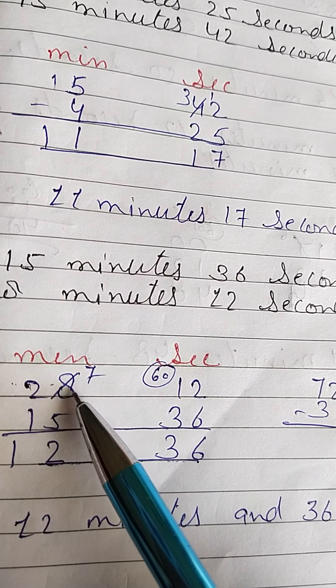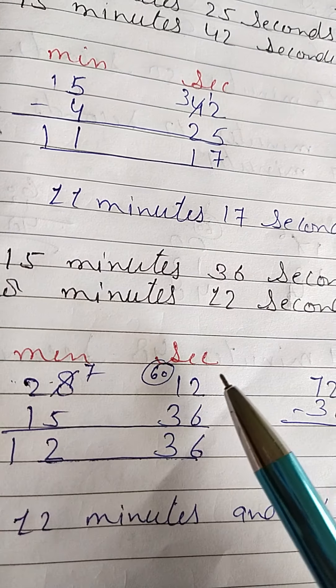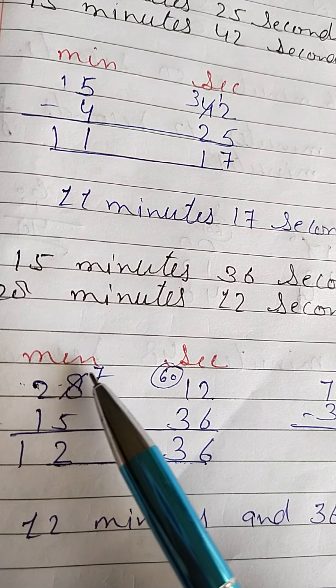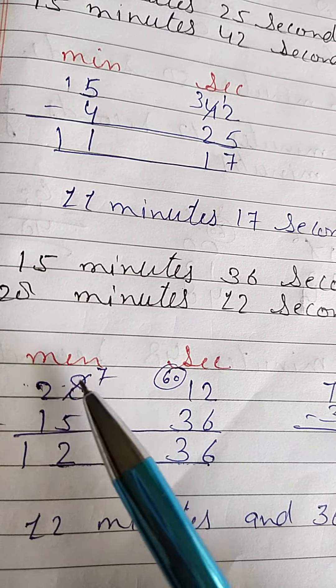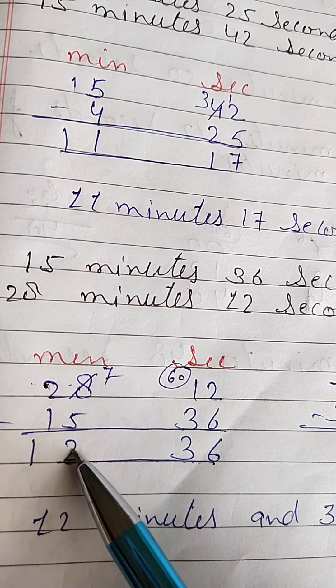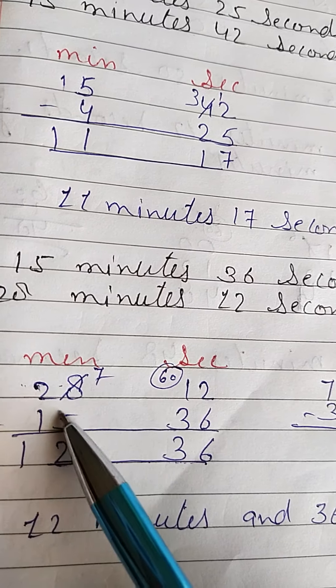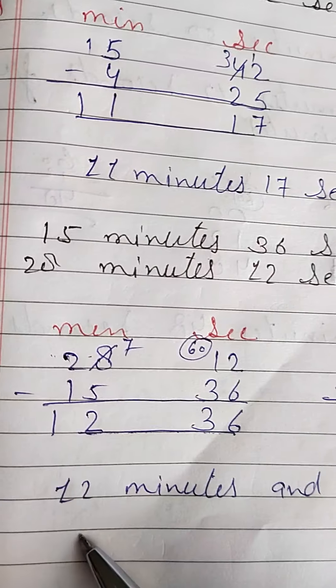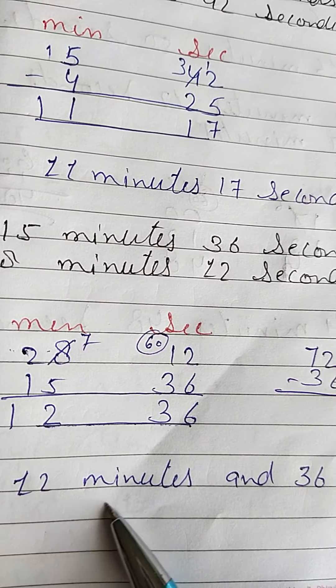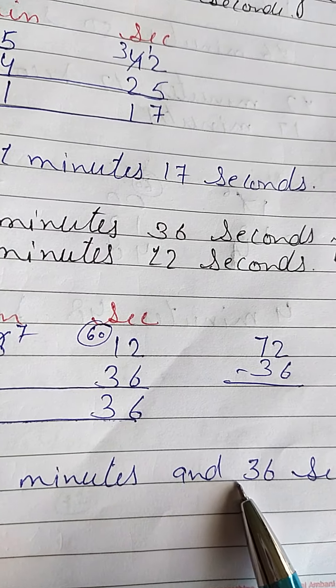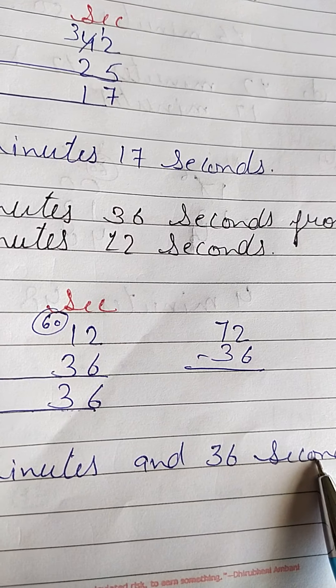And students, since you gave 1 as carry, the minutes become 28 minus 1 = 27, then 27 minus 15 gives 12. So your answer is 12 minutes and 36 seconds.